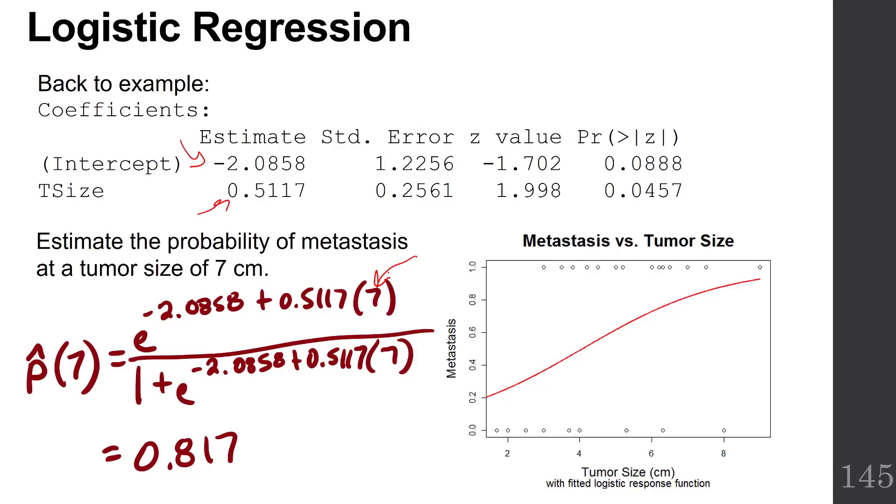And this makes sense from looking at the picture. 7 would be about right here. If you go straight up, you're about right here. And it looks like we're around the 0.8 mark. So if your tumor is 7 centimeters in size, there's an 82% chance of metastasis to the lymph nodes.